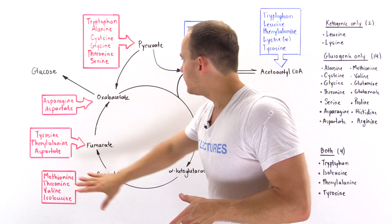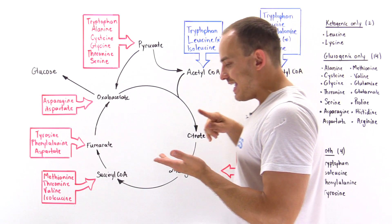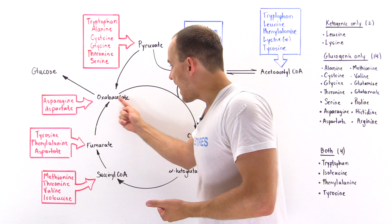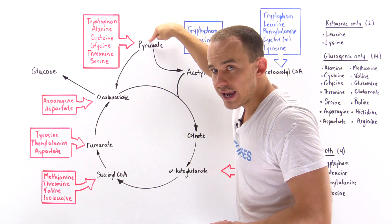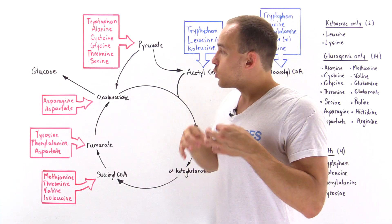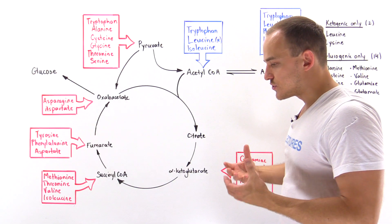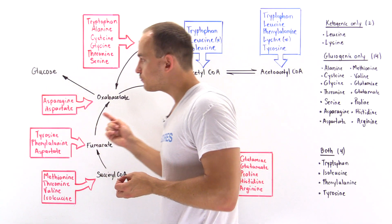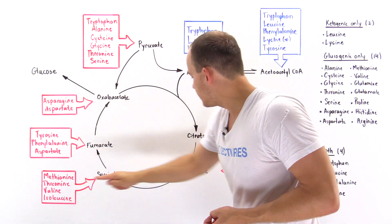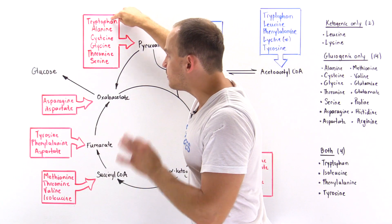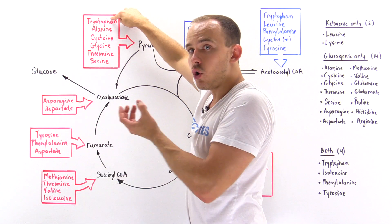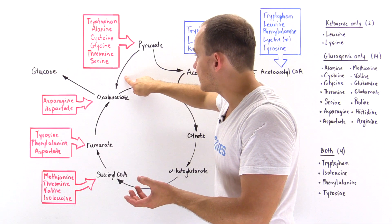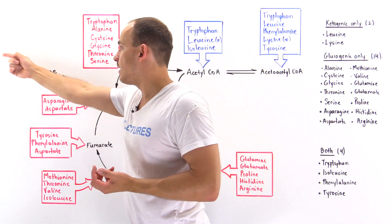Now let's focus on all the different amino acids. If we metabolize an amino acid and the carbon skeleton is used to form any one of these intermediates or pyruvate, these are known as glucogenic. Glucogenic amino acids are those that, when metabolized, help us form intermediates that ultimately lead to the production of glucose. For example, tryptophan — if it follows a specific pathway — will ultimately lead to the production of pyruvate, which via the pyruvate carboxylase enzyme forms oxaloacetate and then helps us form glucose via gluconeogenesis.